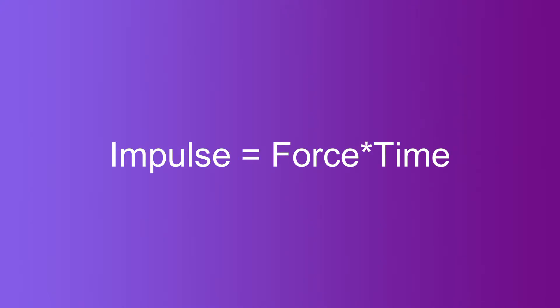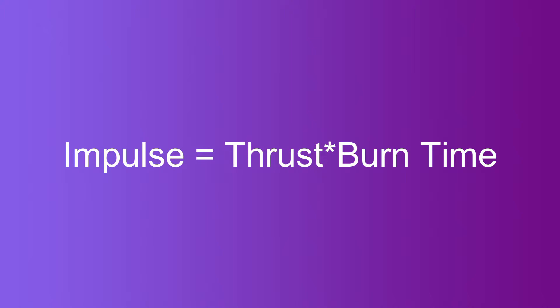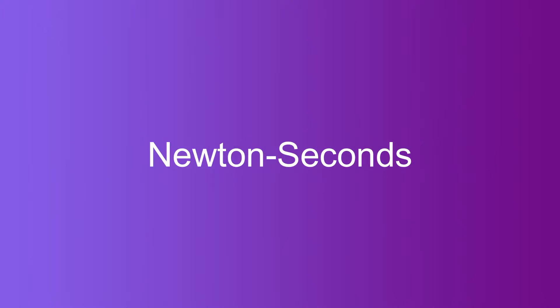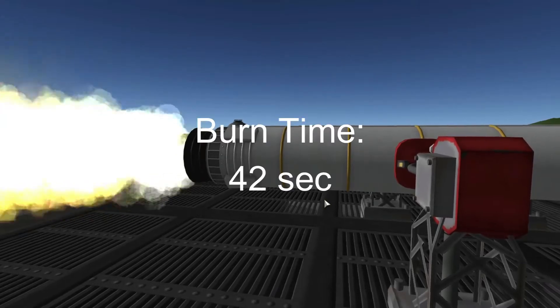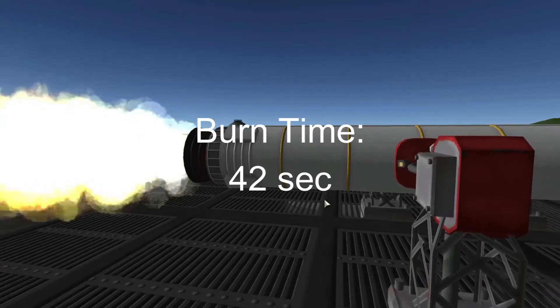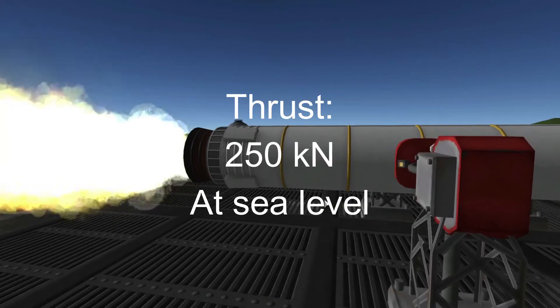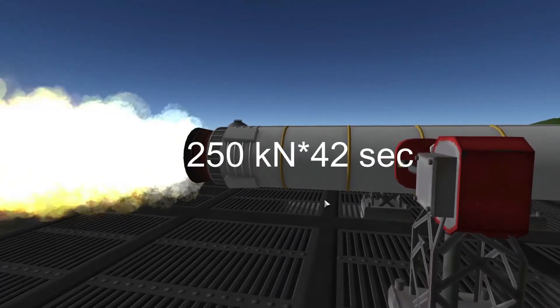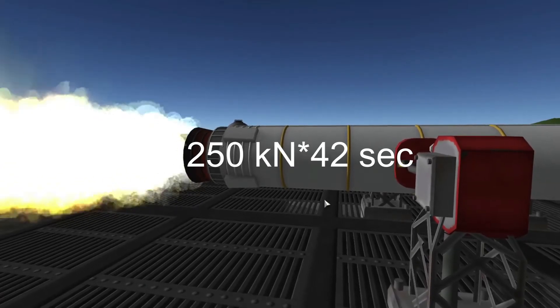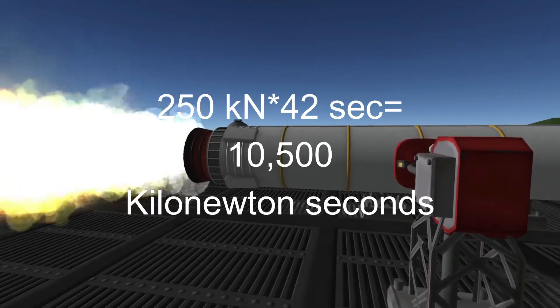Impulse is the easiest to calculate out of all of those. Impulse is calculated by multiplying the thrust by the amount of time the force is being applied. With a rocket, this would be the force of the engine multiplied by the burn time. Impulse is most often measured in Newton seconds. Let's use Kerbal Space Program to illustrate this point. In KSP, the Thumper solid rocket motor has a burn time of 42 seconds and 250 kilonewtons of thrust at sea level. If we multiply 42 seconds by 250 kilonewtons, we get 10,500 kilonewton seconds.